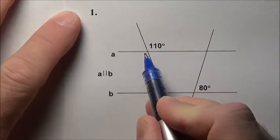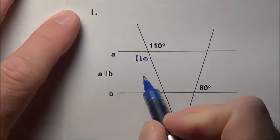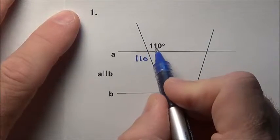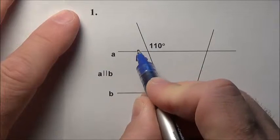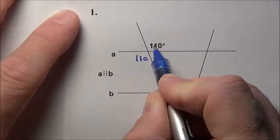If that's 110, its vertical angle right here has to be 110. Right beside it, that has to add up to 180 because there's a linear pair, and that guy and that guy have to be supplementary.